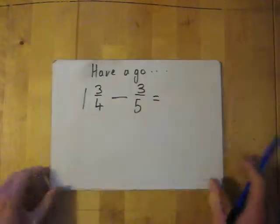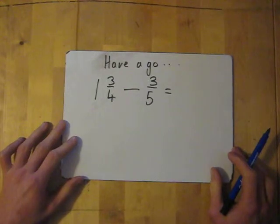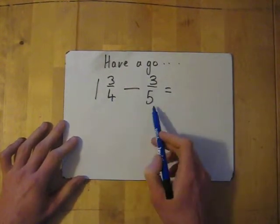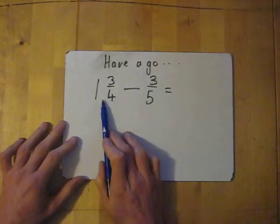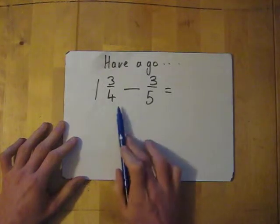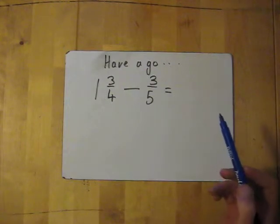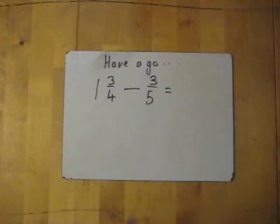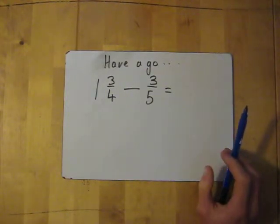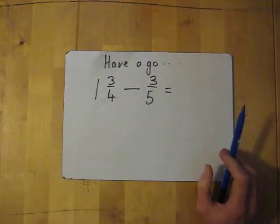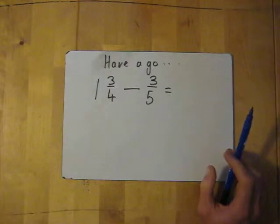One more for you to have a go at. One and three quarters take away three fifths. Remember, convert this into an improper fraction, find the common denominator, convert them and then subtract. Keep the bottom the same and then take away the top. If you want to have a go, I'm going to go through the answer in three seconds. If you want to pause, three, two, one, okay.